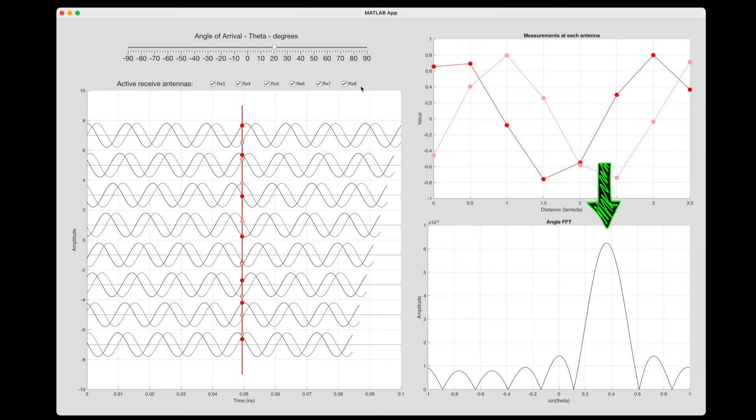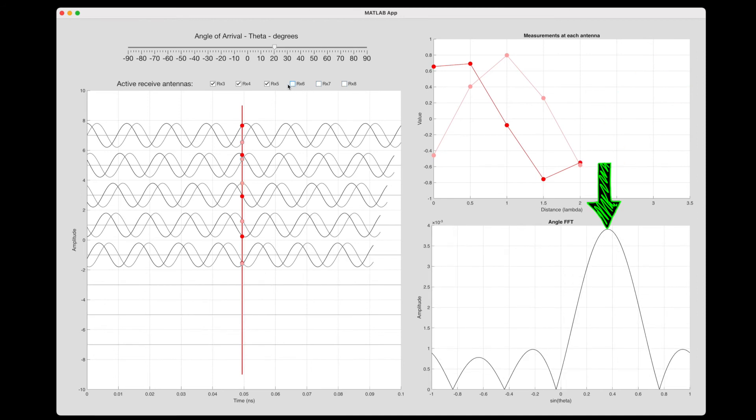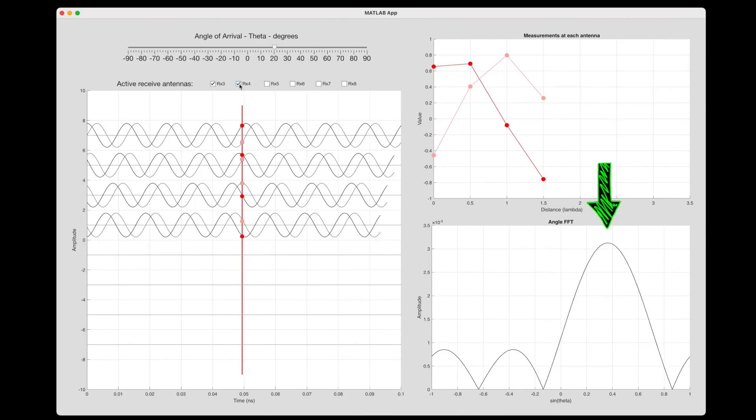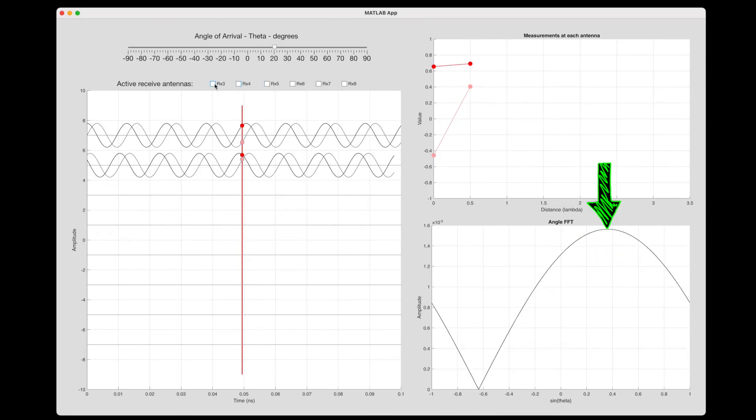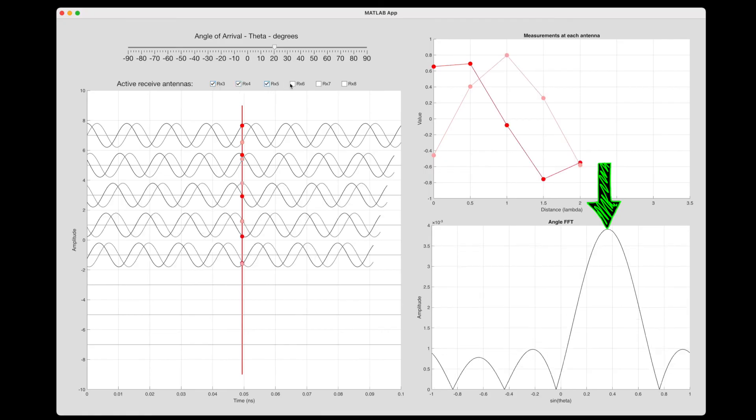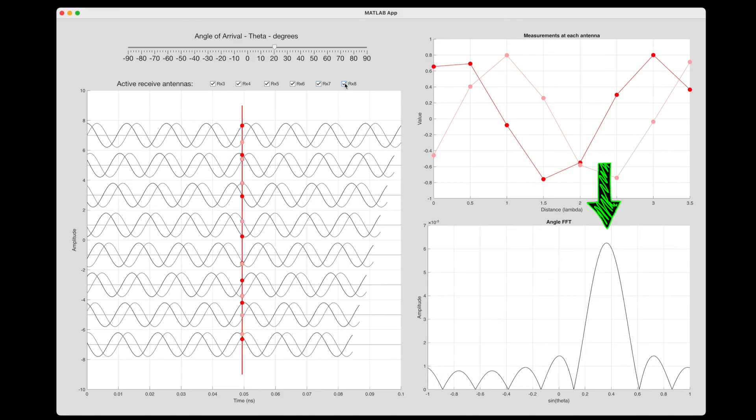Alright, so with all of this, where does resolution come in? Well, take note of how narrow this peak is with eight antennas. Now, as I remove antennas from the array, the peak stays in the same spot, indicating that the angle hasn't changed, but it gets wider with fewer antennas. And this wider peak is analogous to a wider receive antenna pattern. And with a wide receive pattern, you can't distinguish between two close objects.